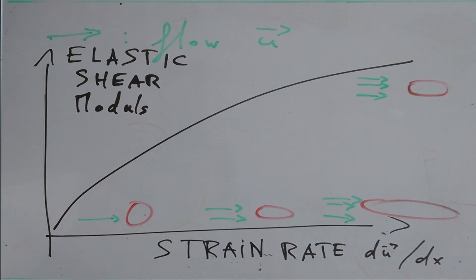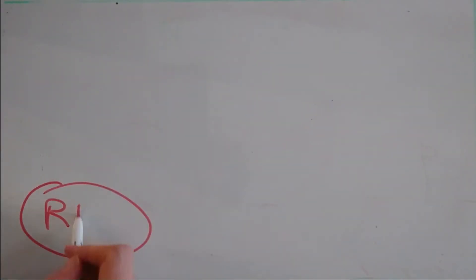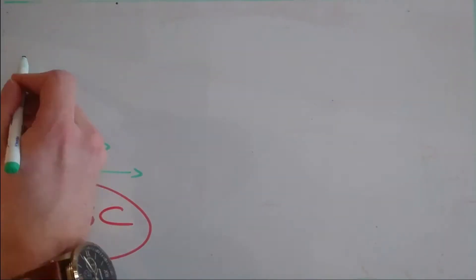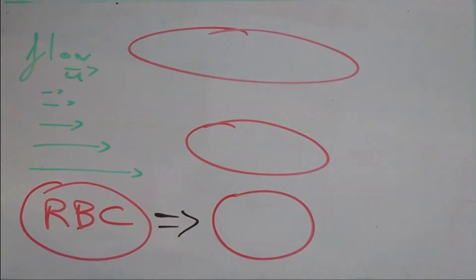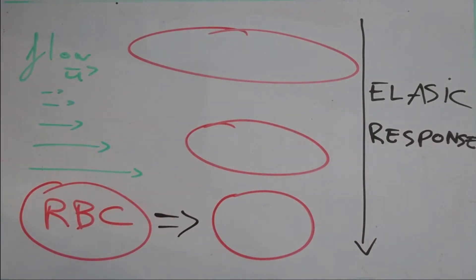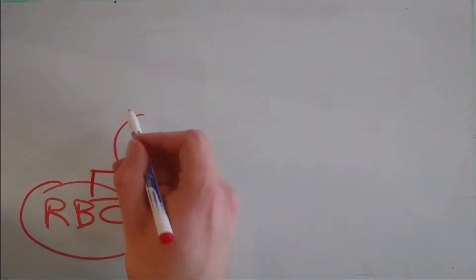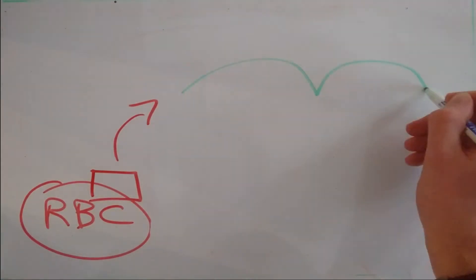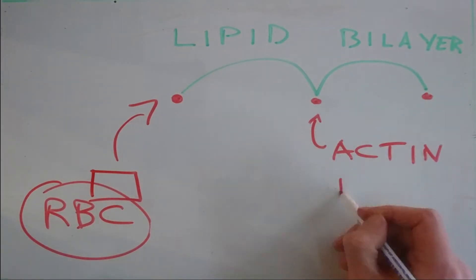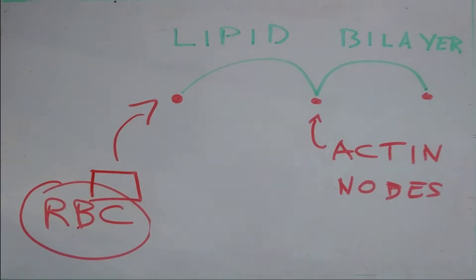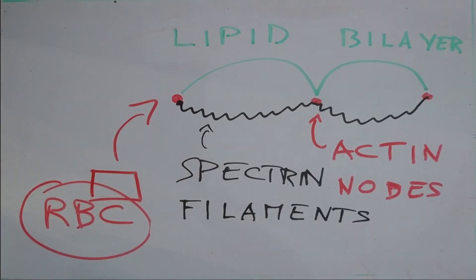To understand such a response, we look at the mechanical properties describing the viscous and elastic response of the cell. The red blood cell's viscoelastic properties are mainly defined by its complex membrane, composed of the lipid bilayer and a spectrin network.